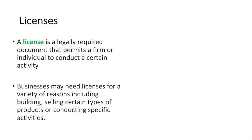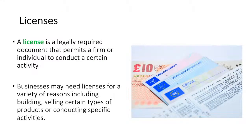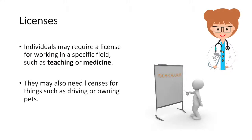A license is a legally required document that permits a firm or individual to conduct a certain activity. The one most people are familiar with is a driving license, which permits you to operate a certain type of automobile. Businesses may need licenses for a variety of reasons including building, selling certain types of products, or conducting specific activities. Individuals may require a license for working in a specific field such as teaching or medicine, or for such things as driving or owning pets.